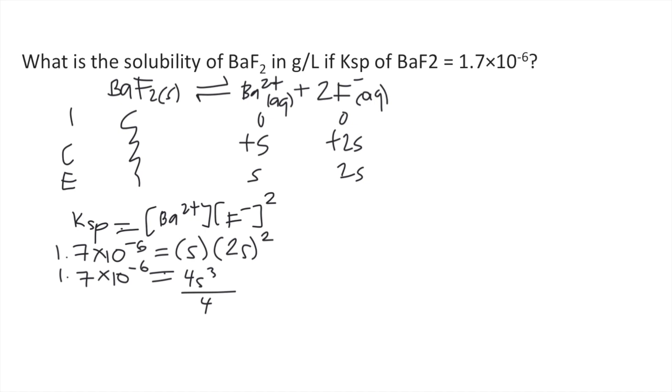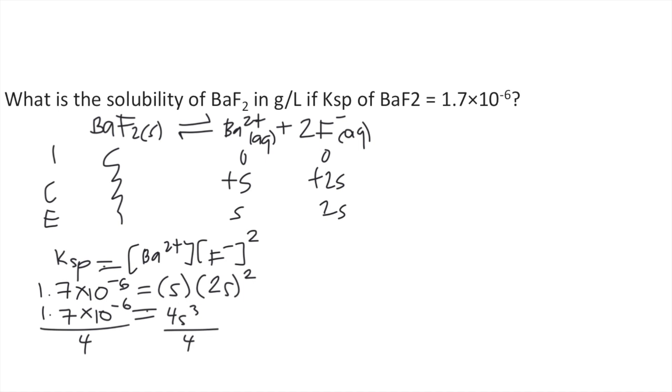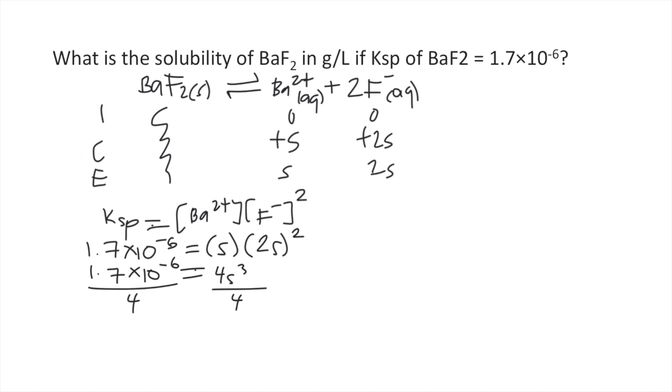So you divide both sides by 4. So 4 cancels on the right side. What's left on the right side is S cubed. On the left side, we have 1.7 times 10 to the negative 6, divided by 4. That is equal to 4.25 times 10 to the negative 7.